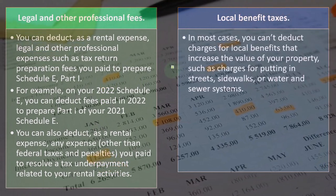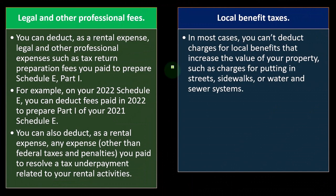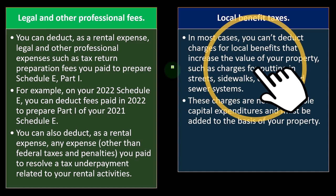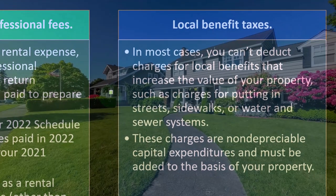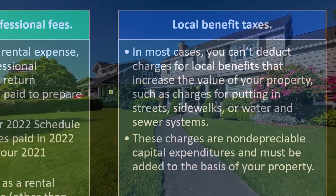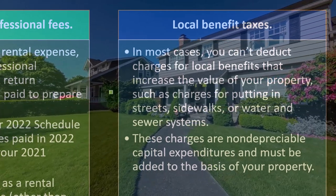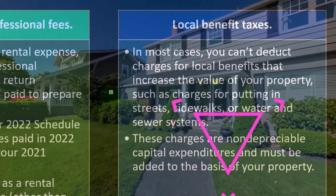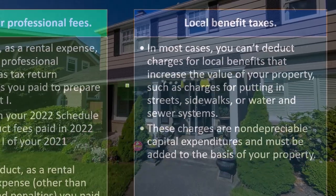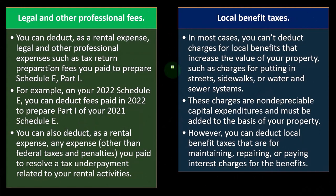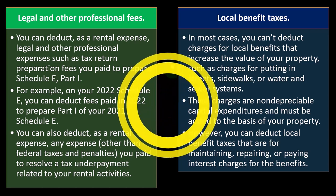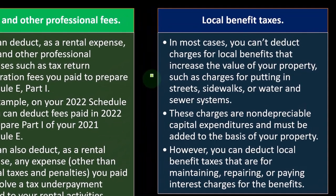Local benefit taxes. In most cases you can't deduct charges for local benefits that increase the value of your property, such as charges for putting in streets, sidewalks, or water and sewer systems. These are non-depreciable capital expenditures and must be added to the basis of your property. From the taxpayer's perspective, we'd like to expense these now rather than capitalizing them, but the tax code generally requires you to include them as capital assets, so you don't get the expense until you depreciate it over a very long time frame. However, you can deduct local benefit taxes that are for maintaining, repairing, or paying interest charges for the benefits.